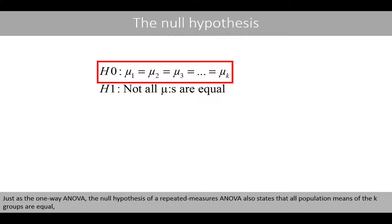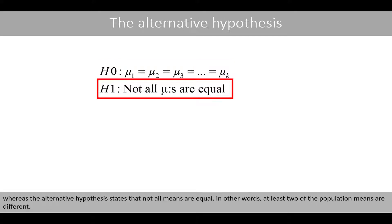Just as the one-way ANOVA, the null hypothesis of a repeated measures ANOVA also states that all population means of the K-groups are equal, whereas the alternative hypothesis states that not all means are equal — in other words, at least two of the population means are different.